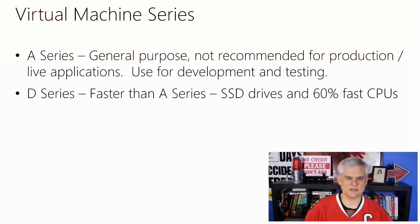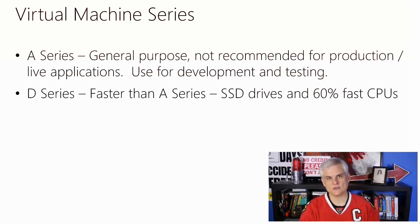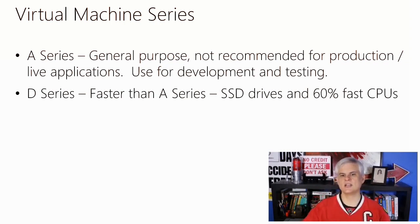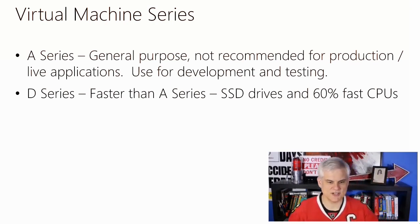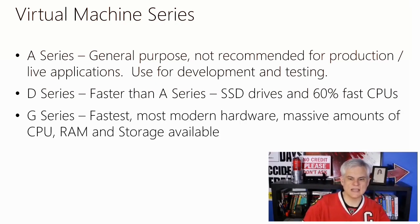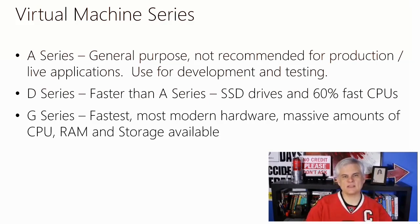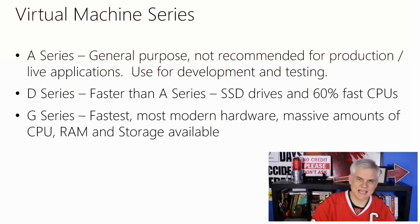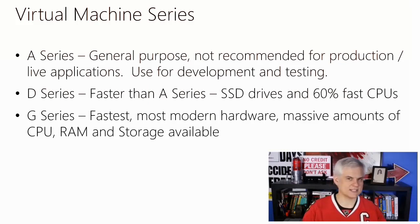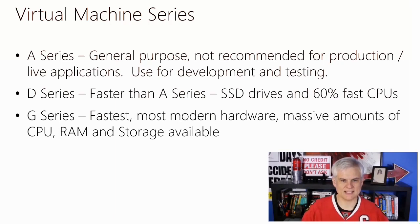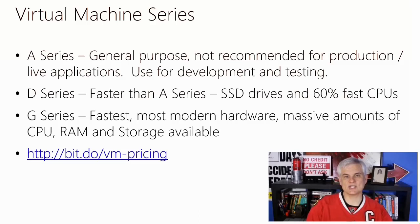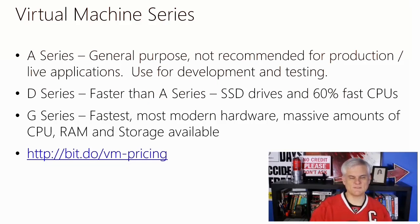Then there are the D series virtual machines, which are faster — they use solid-state hard drives instead of platters and faster CPUs. And then finally there is the heavy-duty G series, which is the fastest, uses the most modern hardware, and can scale up to massive amounts of CPU, RAM, and storage space. The G series is only available in limited data centers at the time of recording. Keep in mind that this information is likely to change frequently, so you always want to refer to the pricing page.